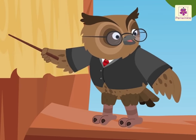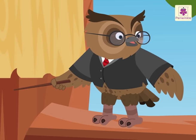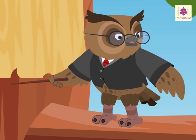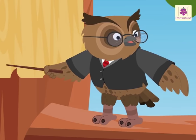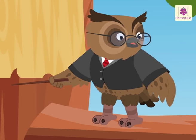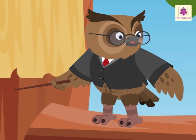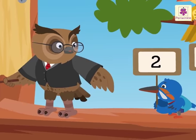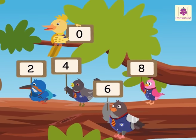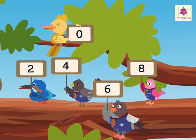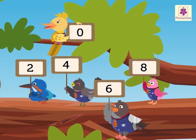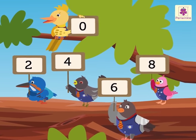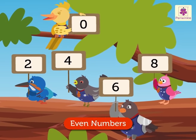Let us begin our lesson today by understanding what even numbers and odd numbers are. All numbers with the digits 0, 2, 4, 6, or 8 in the ones place are called even numbers.